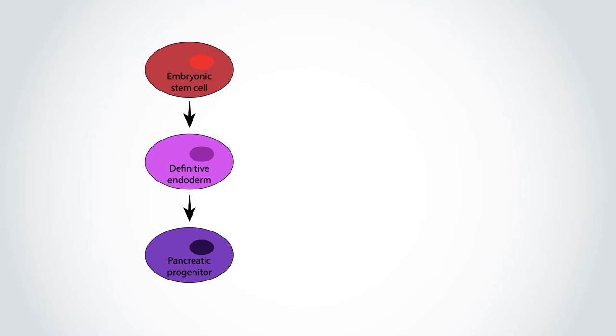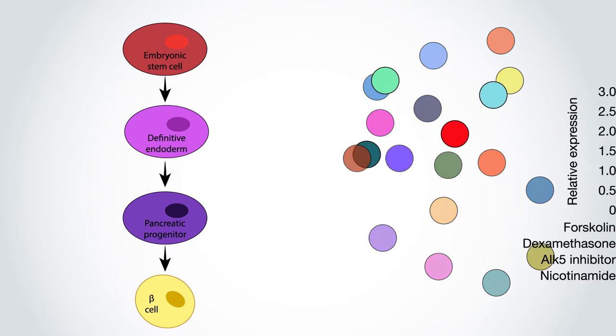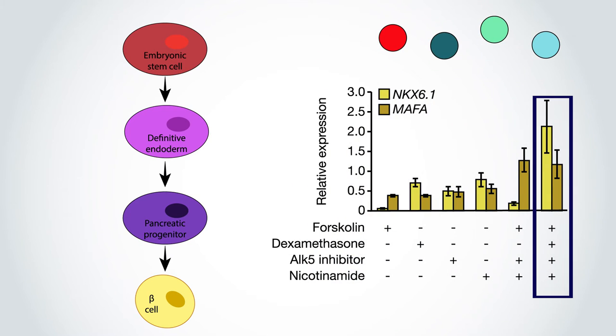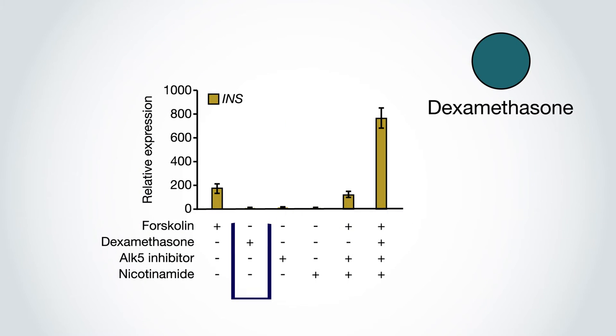Finally, to morph the progenitors into beta cells that produce insulin, the team screened 20 different molecules, settling on four in combination. Interestingly, one factor, dexamethasone, did nothing on its own, but it proved to be the necessary fourth ingredient to boost insulin production.